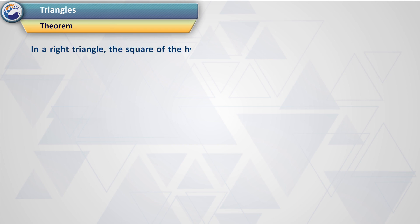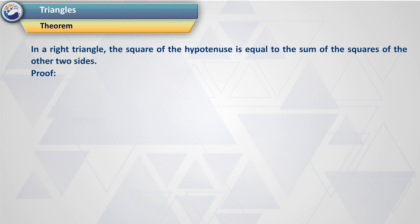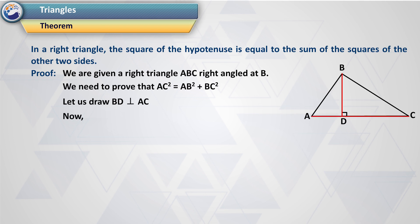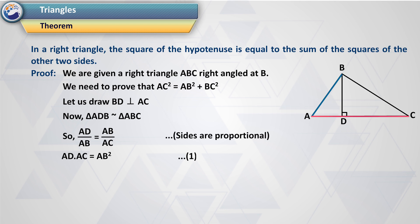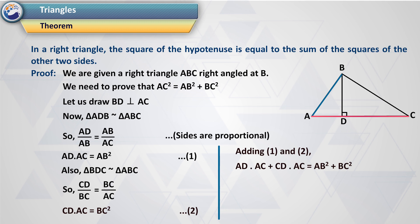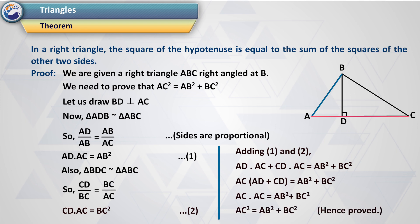In a right triangle, the square of the hypotenuse is equal to the sum of the squares of the other two sides. Proof: We are given right triangle ABC, right-angled at B. We need to prove AC² = AB² + BC². Draw BD perpendicular to AC. Now triangle ADB is similar to triangle ABC, so AD/AB = AB/AC, giving AD × AC = AB² — equation 1. Also triangle BDC is similar to triangle ABC, so CD/BC = BC/AC, giving CD × AC = BC² — equation 2. Adding: AD × AC + CD × AC = AB² + BC², so AC(AD + CD) = AB² + BC², giving AC × AC = AB² + BC². Therefore AC² = AB² + BC². Hence proved.